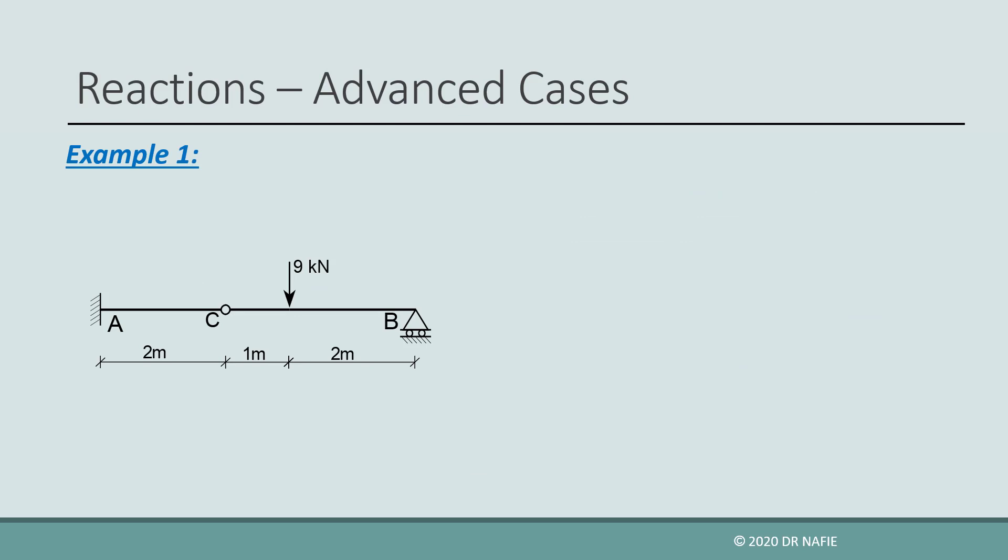Now let us start working on some examples. The following beam has two supports: a fixed support at A and a roller support at B. Therefore, it will have four unknown reactions. Because we have four unknowns and only three basic equilibrium equations, we need an additional equation. This we can obtain from the hinge at C.